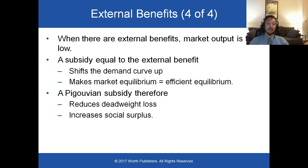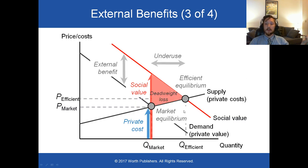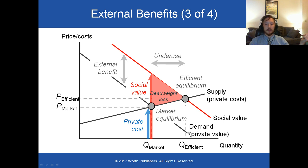A Pigouvian subsidy therefore reduces deadweight loss and increases social surplus. Here's our private demand curve — by subsidizing purchases, we can shift this private demand curve up so that the private value is equal to the social value. If the external benefit is $3, then a $3 subsidy will make the demand curve look like the social value curve.